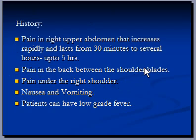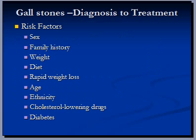In cases of gallstones, patients present with pain in the right upper abdomen that increases rapidly and lasts from 30 minutes to several hours — up to five hours — most often after a meal. There is also pain in the back between the shoulder blades, pain under the right shoulder, nausea and vomiting, and patients can also have a low-grade fever.